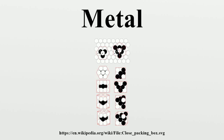Alloys: An alloy is a mixture of two or more elements in which the main component is a metal. Most pure metals are either too soft, brittle or chemically reactive for practical use. Combining different ratios of metals as alloys modifies the properties of pure metals to produce desirable characteristics. The aim of making alloys is generally to make them less brittle, harder, resistant to corrosion, or to have a more desirable color and luster. Of all the metallic alloys in use today, the alloys of iron make up the largest proportion both by quantity and commercial value.